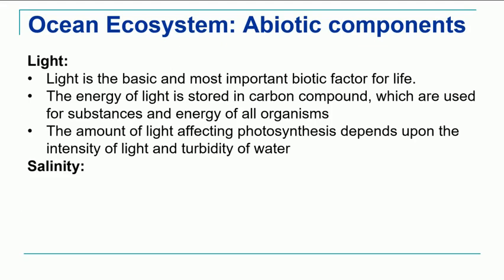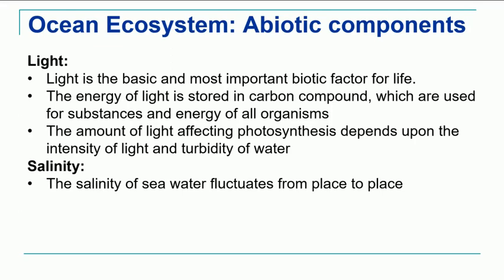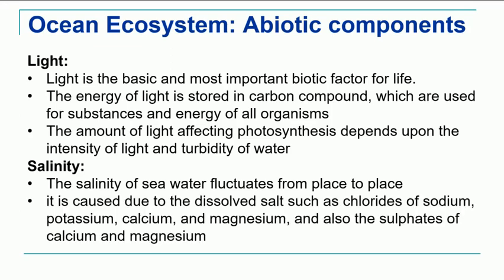The second important abiotic factor is salinity, meaning the salt content of the ocean. The salinity of sea water is not constant but fluctuates from one place to another. This difference is due to the presence of dissolved salts — chlorides of sodium, potassium, calcium, and magnesium, as well as the sulphates of calcium and magnesium. All these elements contribute to the salinity of the seas.